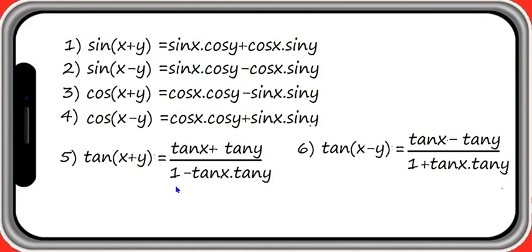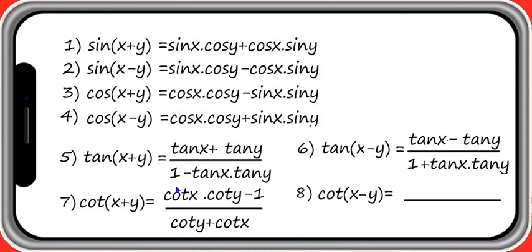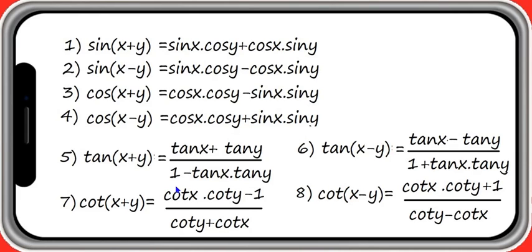The seventh formula is cot of x plus y, equal to cot x cot y minus 1, divided by cot y plus cot x. For cot of x minus y, replace minus with plus and plus with minus. The last formula is: cot of x minus y is equal to cot x cot y plus 1, divided by cot y minus cot x.